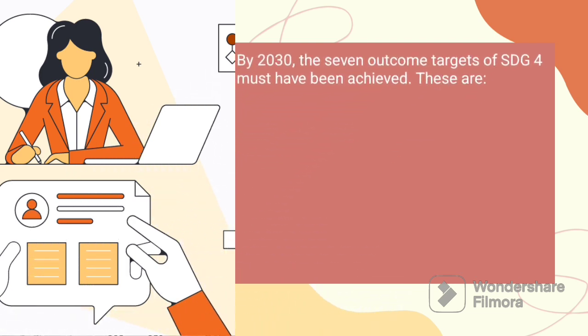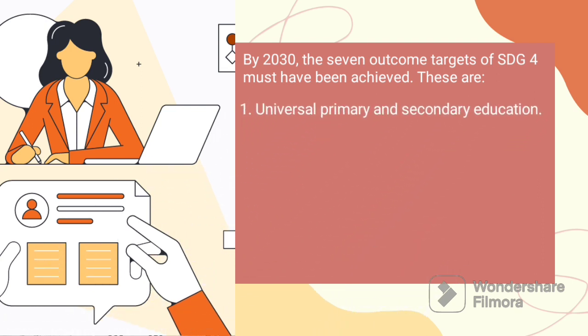By 2030, the seven outcome targets of SDG must have been achieved. Number one is universal primary and secondary education. This ensures all girls and boys complete free, equitable, and quality primary and secondary education, leading to relevant and effective learning outcomes.